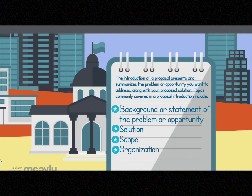The introduction of a proposal presents and summarizes the problem or opportunity you want to address, along with your proposed solution. Topics commonly covered in a proposal introduction include: background or statement of the problem or opportunity — briefly present the problem or opportunity, convince readers that it exists, and establish the need for action. Solution — briefly describe the change you propose, highlighting the benefits of such changes. Scope — what will or will not be done. And organization.